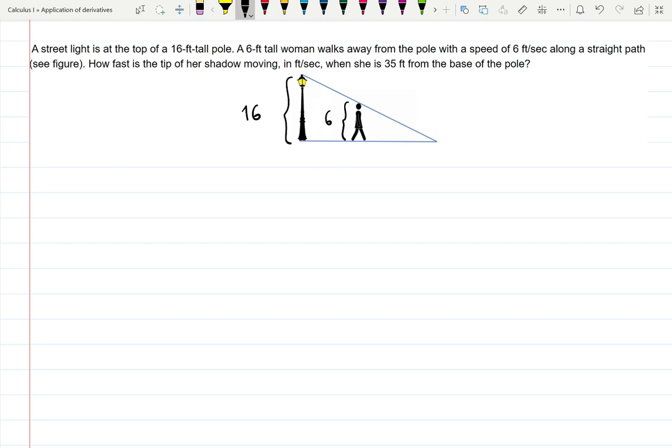The woman is walking away from the pole, so direction on the right on my diagram, with a constant speed of six feet per second.